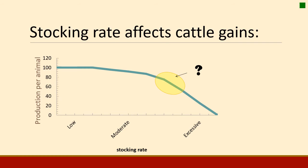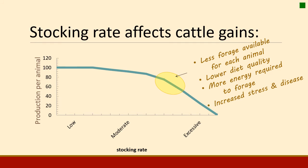Why, as you increase stocking rate, do individual animals not get as fat as they could? A few reasons: first, as you get more animals in the pasture, there's simply less forage per animal, and diet quality is lower because they can't get the best quality forage. There's also more energy required to get that forage — they may have to travel further, go up slope a bit more, or chew longer because it's lower quality. And when you get a lot of animals in a small space, you can start to have issues with stress and disease. There is a point where adding another animal means all animals suffer — not enough forage, lower diet quality, more energy required, and stress.